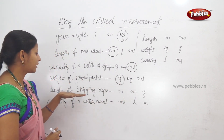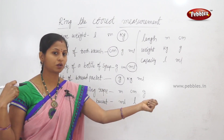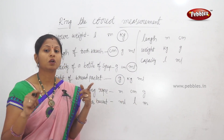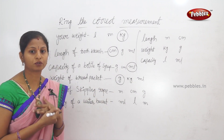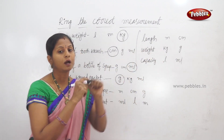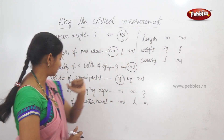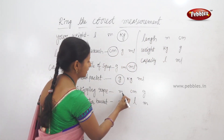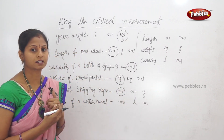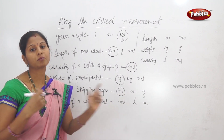Next example: length of a skipping rope. When we do skipping, we hold two sides and jump. So that is long length or short length? The skipping rope is long length. Long length is measured in meters. So we measure it in meters.